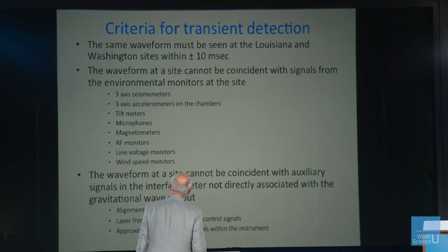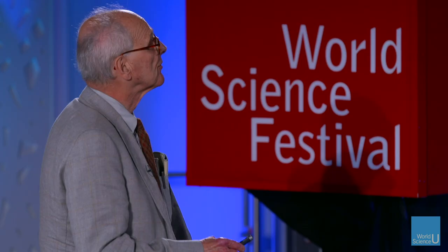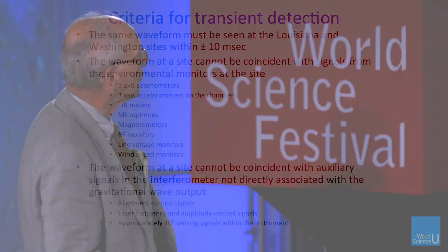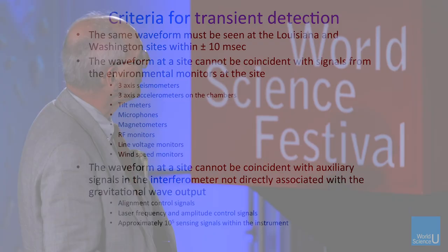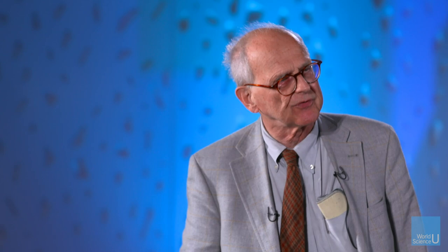Now let's talk about the detection. These are the criteria for detecting something. Did we see something at both sites? At each site, we should see the same thing within 10 milliseconds. You also have all sorts of sensors which sense the environment, and whatever you see that you think is a gravitational wave should not be seen in those environmental sensors. Furthermore, there are something like a hundred thousand signals coming out of the detector measuring things like how well the mirrors are pointing, how well the lasers are stabilized — there should be no disturbing signals in those either when you think you've made a detection.